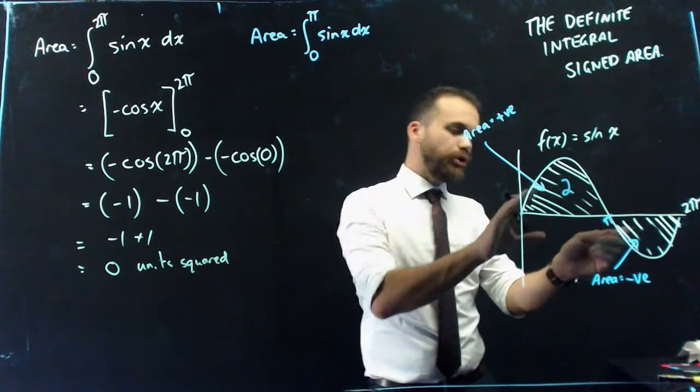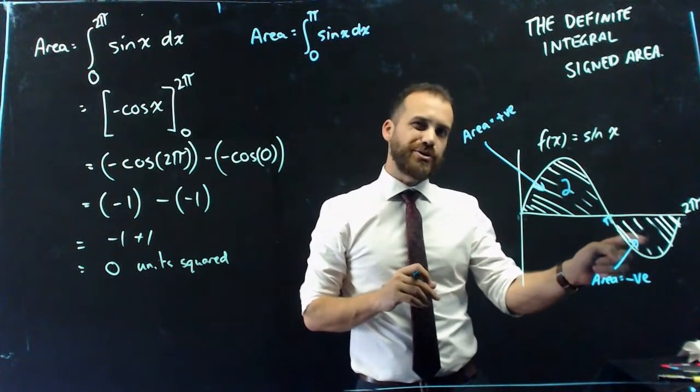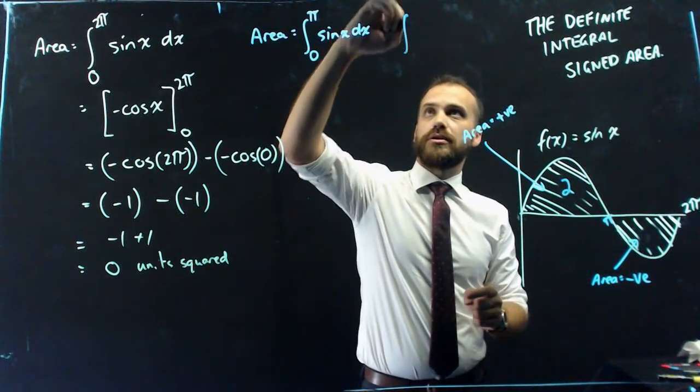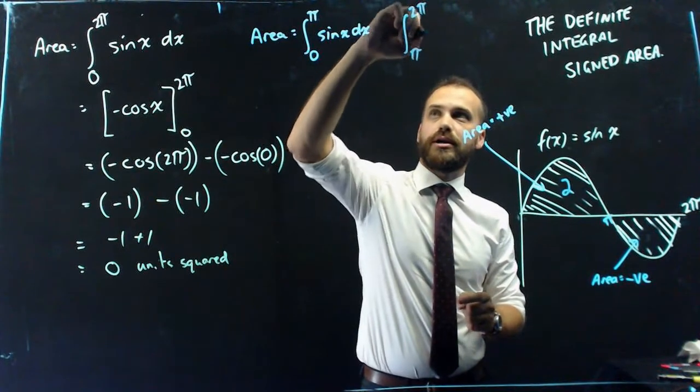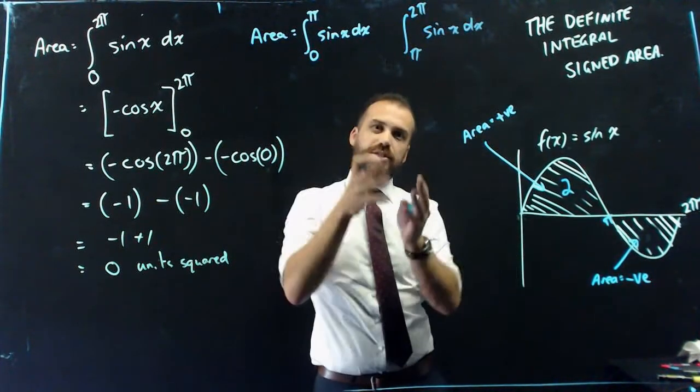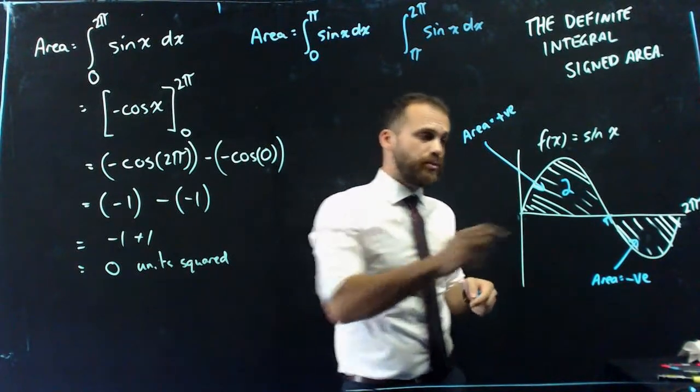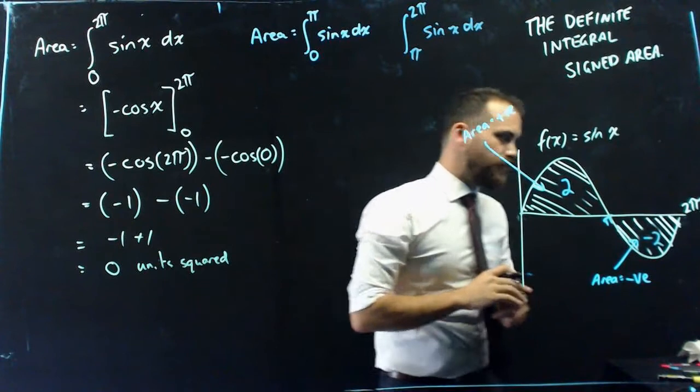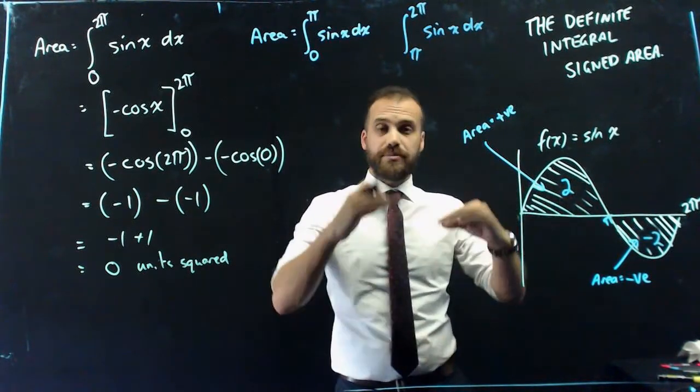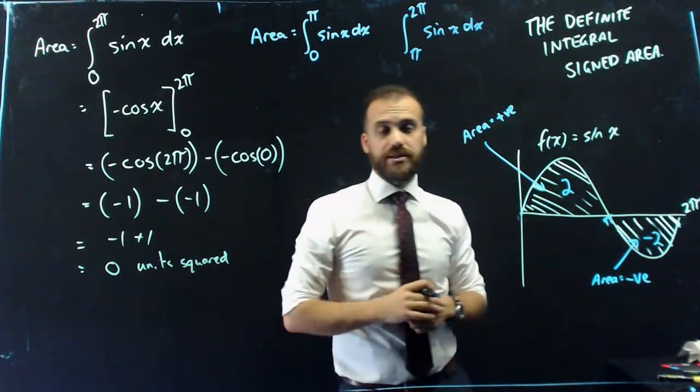Now, you should remember that a sine curve is kind of symmetrical here, so the area of that is also 2. But if I were to do from 2 pi to pi of sin x with respect to x, which is what we'd expect to happen, we wouldn't get the answer of 2. We'd actually get an answer of negative 2. Because area in this case is signed, this is a positive area because it's above the x-axis, this is a negative area because it's below the x-axis.